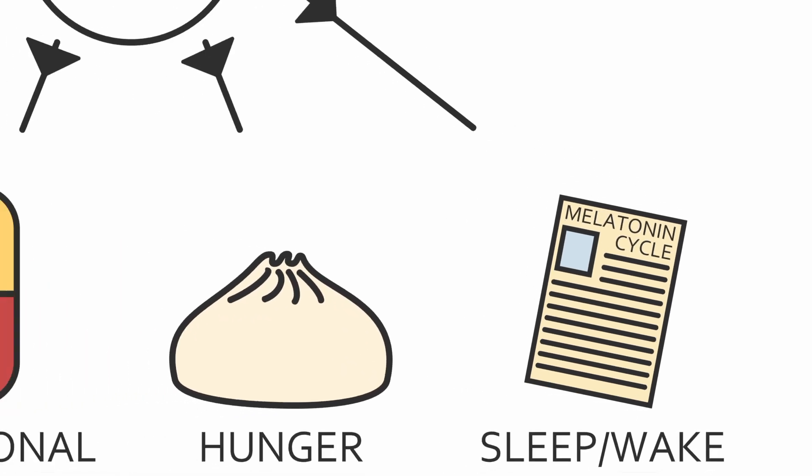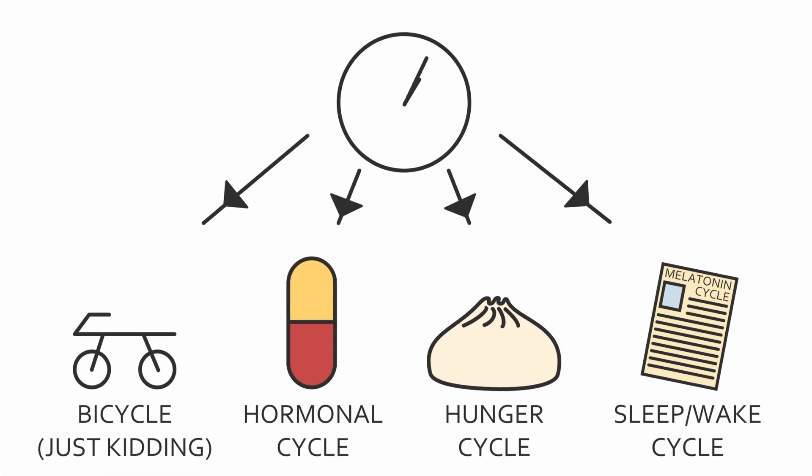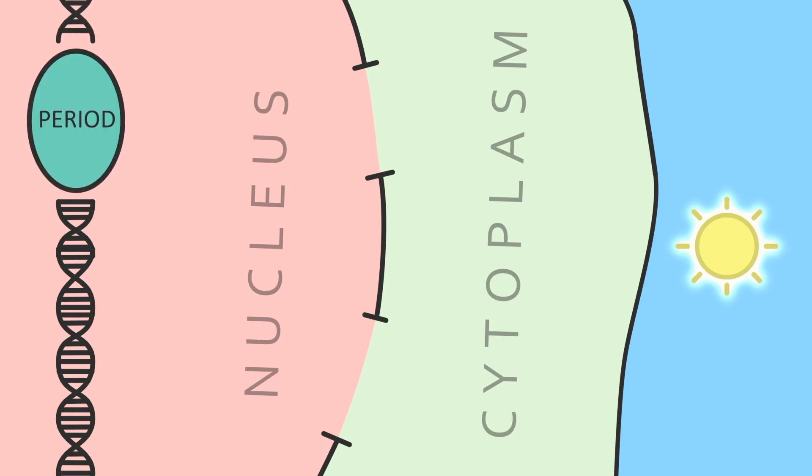What they were studying is the master clock behind circadian rhythm, which runs in every cell in the body and runs every cycle in the body. Even bacteria have them. How does it work? It begins in the DNA, with this gene, period.